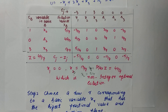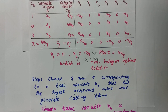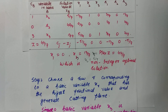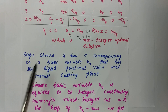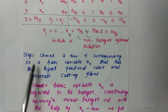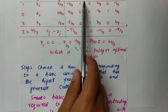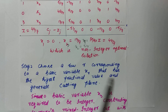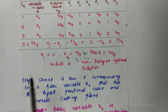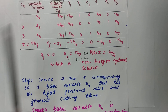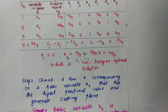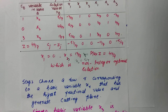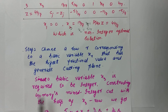Now we have to obtain the mixed integer optimal solution. For that we have to convert x3 from a non-integer into an integer. For this we proceed to step number two: choose a row r corresponding to a basic variable xr that has the highest fractional value, and generate a cutting plane. Here the basic variables are x2 and x3. The highest fractional value is 13/7, so we choose x3 to convert into an integer.